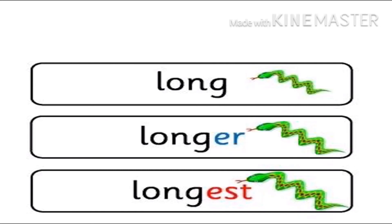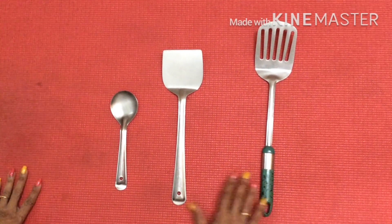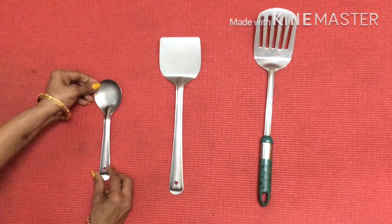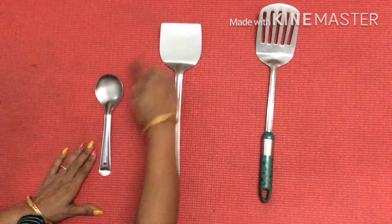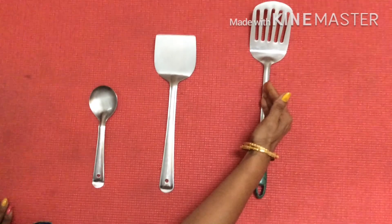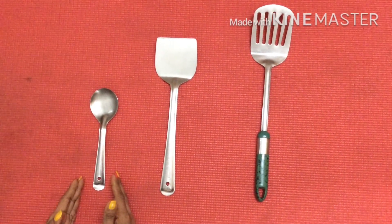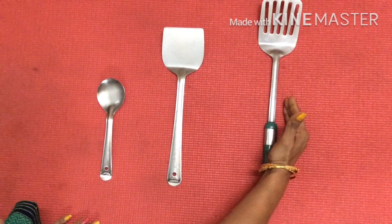Now let's go and see a video to get better clarity. Now you can see on this mat I have placed spoons or ladles of three different sizes. This steel ladle is long. The one in the center is longer, and the one with the green handle which is kept on this corner is the longest. So comparison of sizes this way: long, longer and longest.